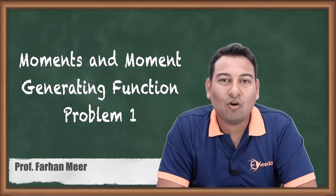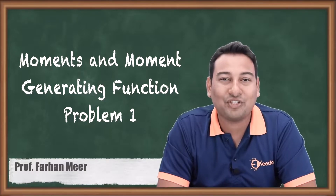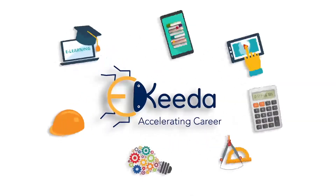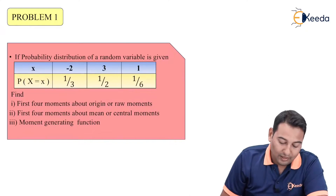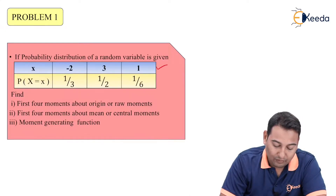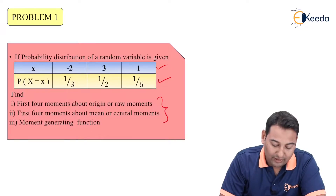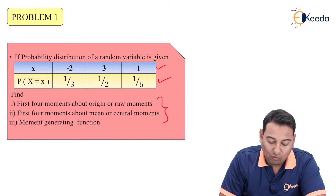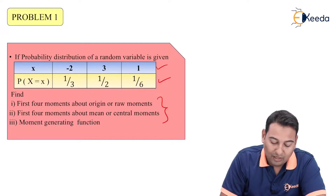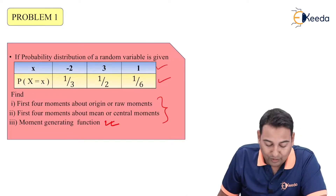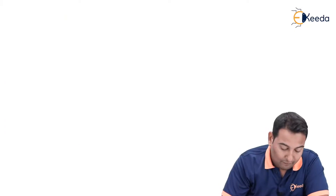Hello friends, in this video we'll be discussing examples on moments and moment generating function. This is our first problem. We discussed the formulas for moments and moment generating function in the last video, and we'll be using those formulas for solving this particular problem. A distribution is given with values of random variable x and their probabilities. We need to find three things: the first four raw moments, the first four central moments, and the moment generating function.